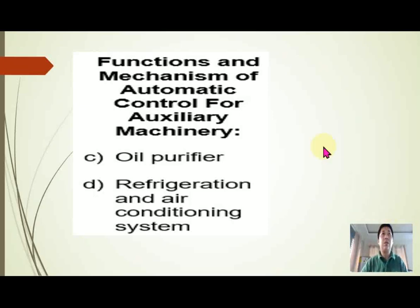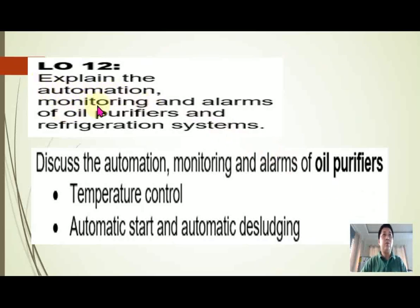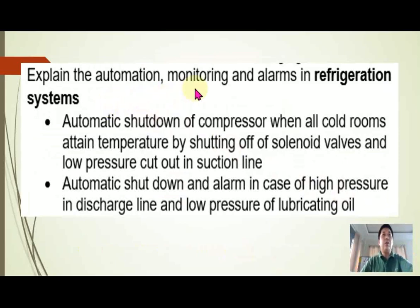Functions and mechanisms of automatic control for auxiliary machinery — oil purifier, refrigeration system, and air conditioning. Learning objectives: explain the automation monitoring and alarm of oil purifiers and refrigeration systems, automation monitoring and alarms, oil purifiers character control, automatic start and automatic dislodging. Also explain automation monitoring and alarms in the refrigeration systems: automatic shutdown of the compressor when all cold rooms attend temperature by shutting off solenoid valves and low pressure cut-out in suction line, automatic shutdown and alarm in case of high pressure in discharge line and low pressure.